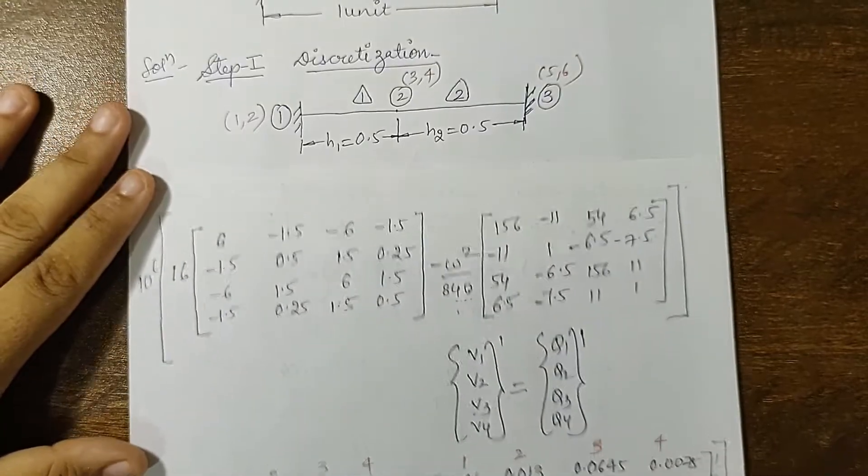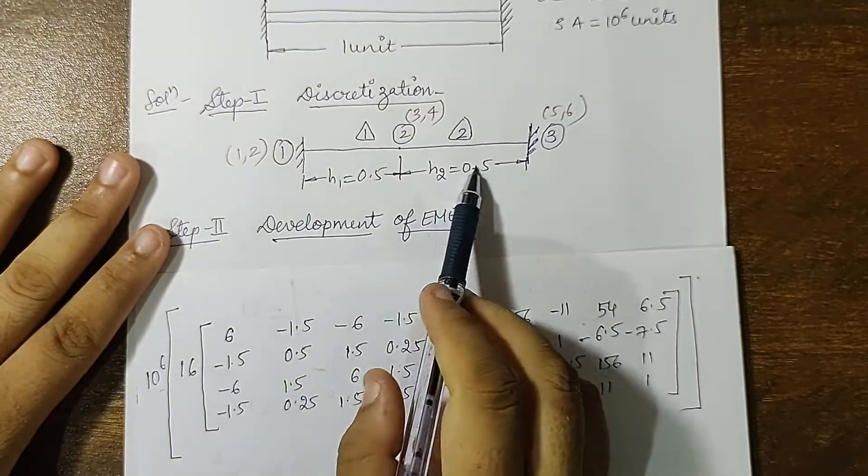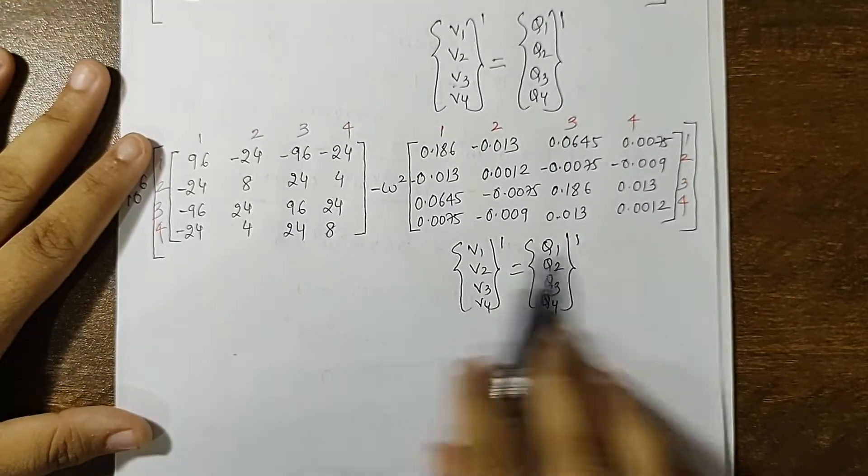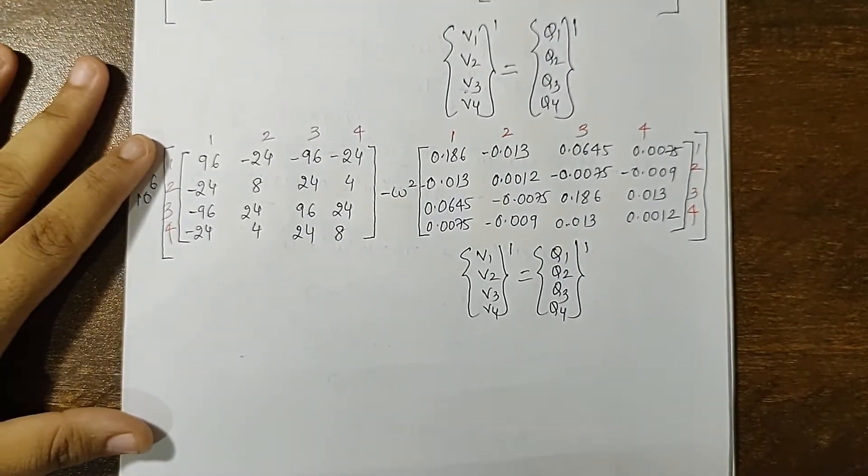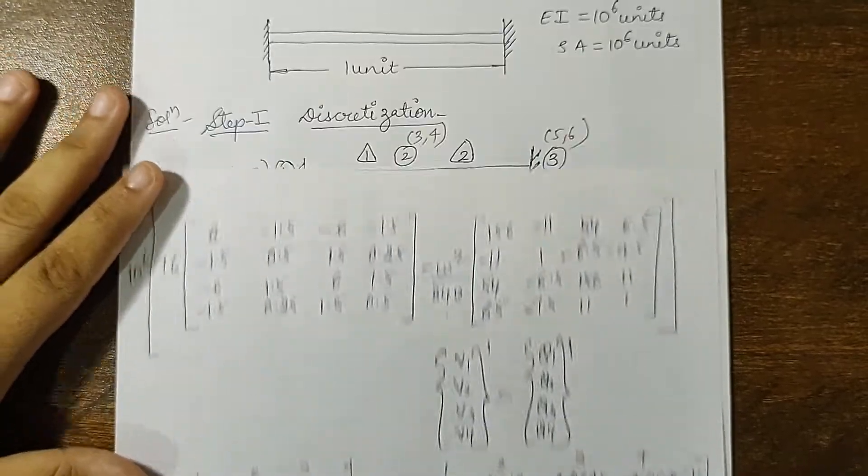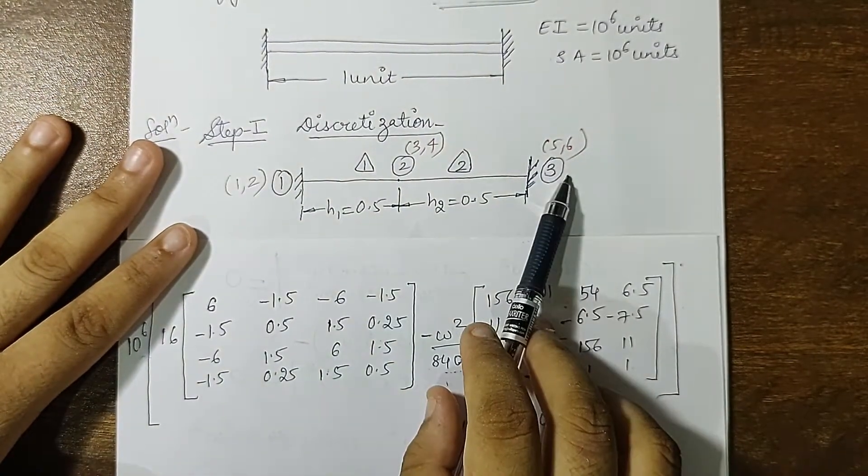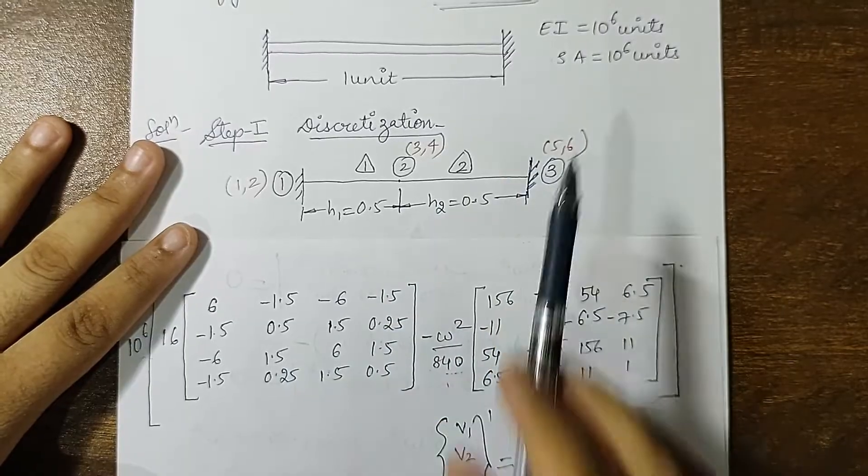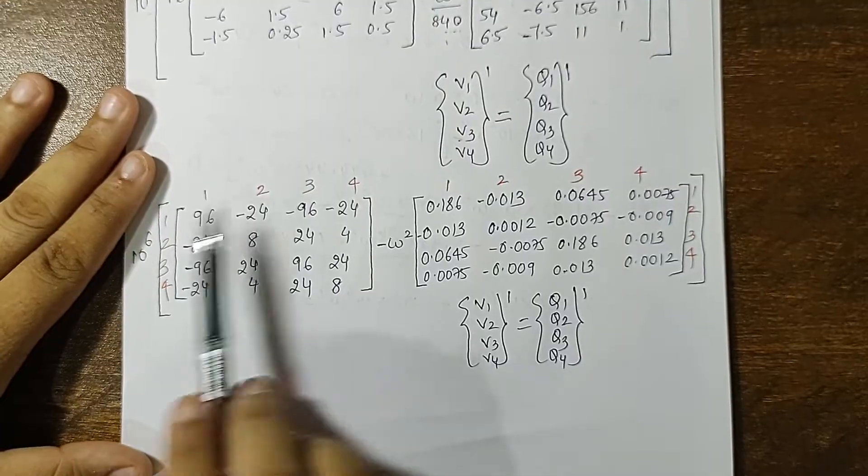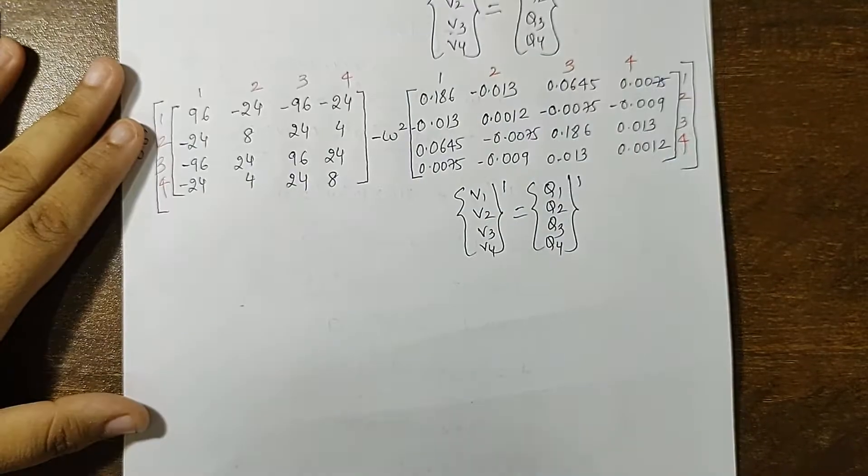Now I will go for element 2. If you look at element 2, it is exactly similar to element 1. So whatever I have written in this matrix, the same thing can be written for element 2 except the node numbers are 2, 3 for element 2 which means the degree of freedom is 3, 4 and 5, 6. So after writing this entire matrix, I should write the degree of freedom as 3, 4, 5, 6, 3, 4, 5, 6. Let's jot it down.